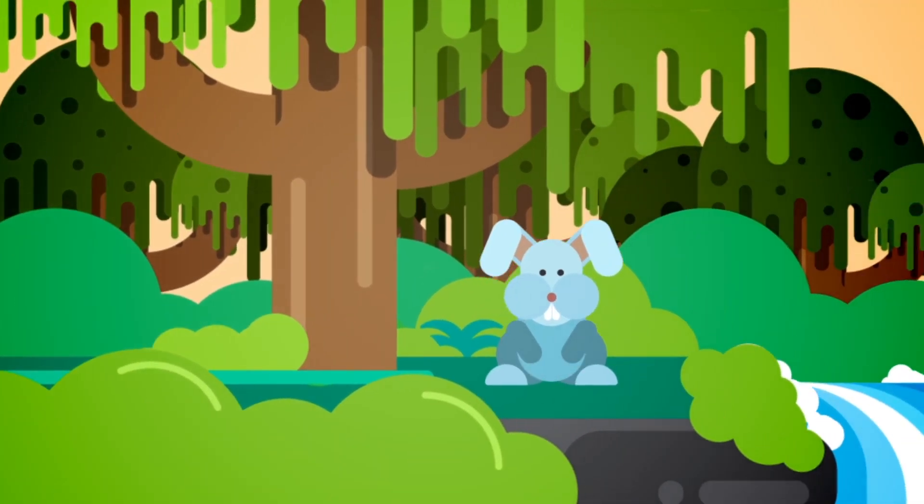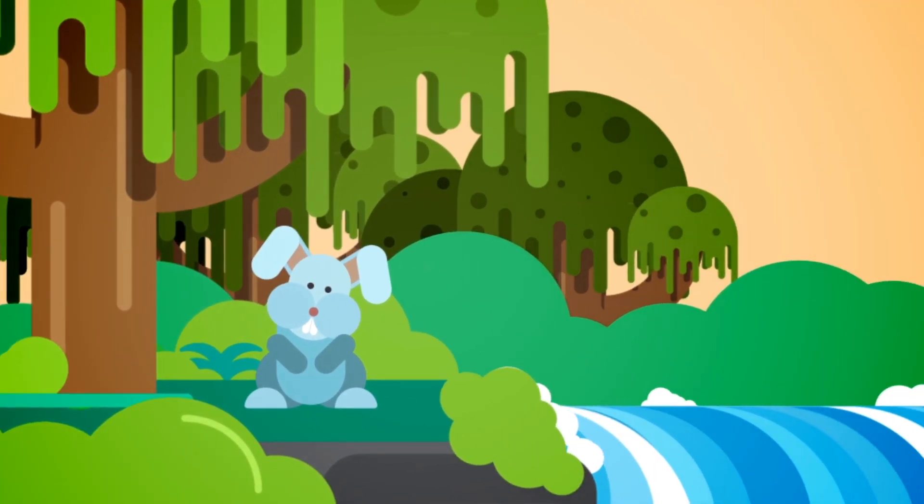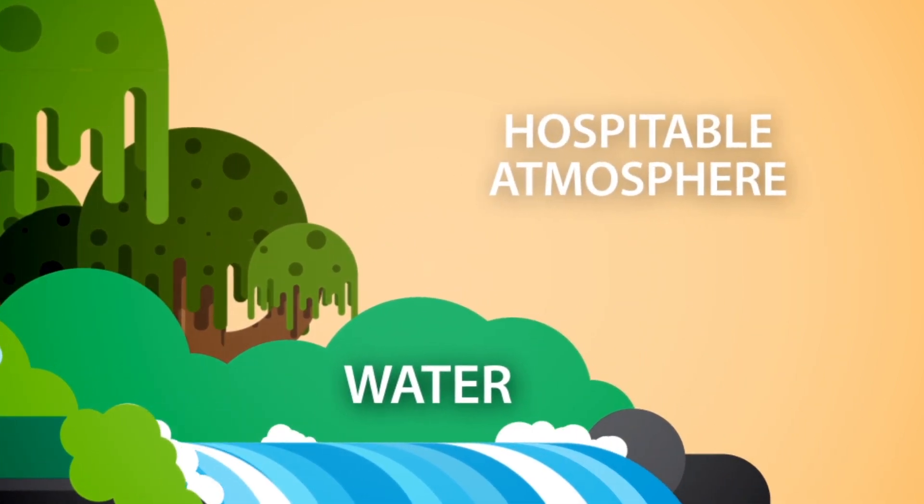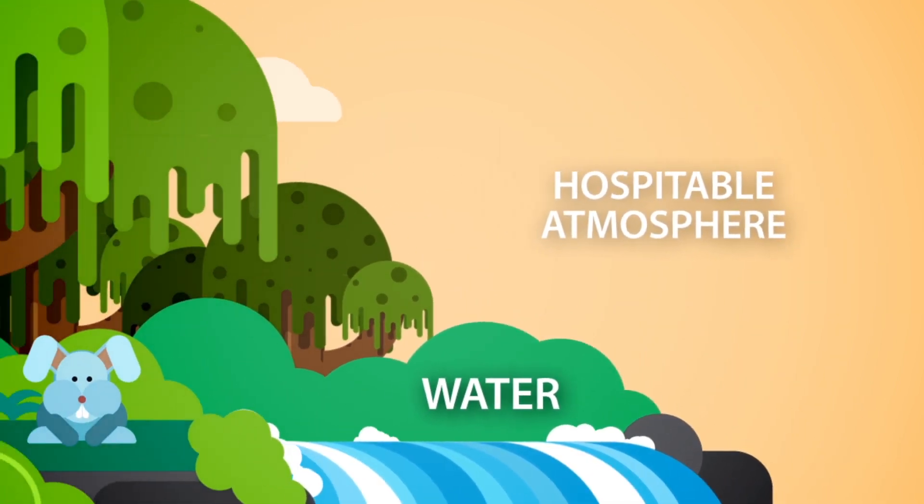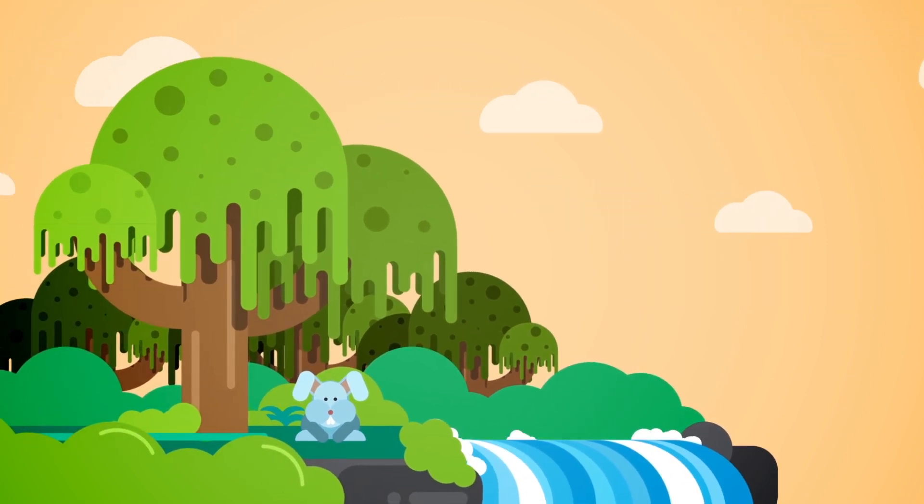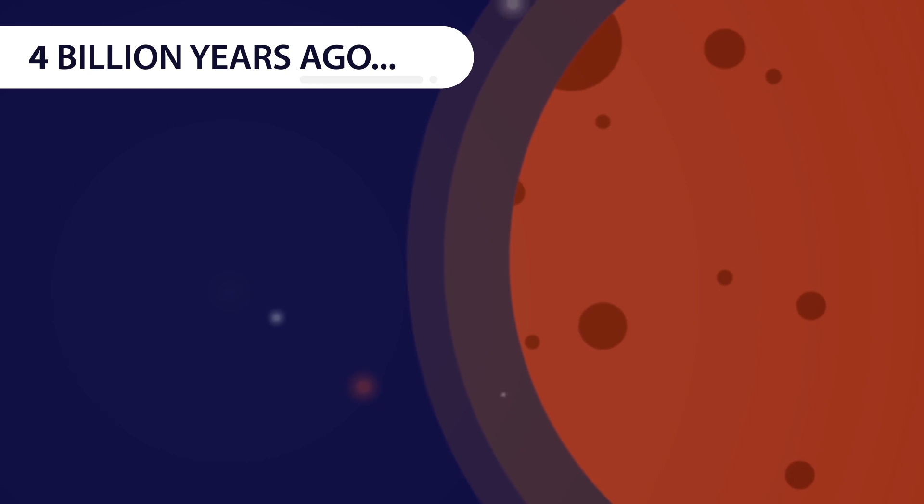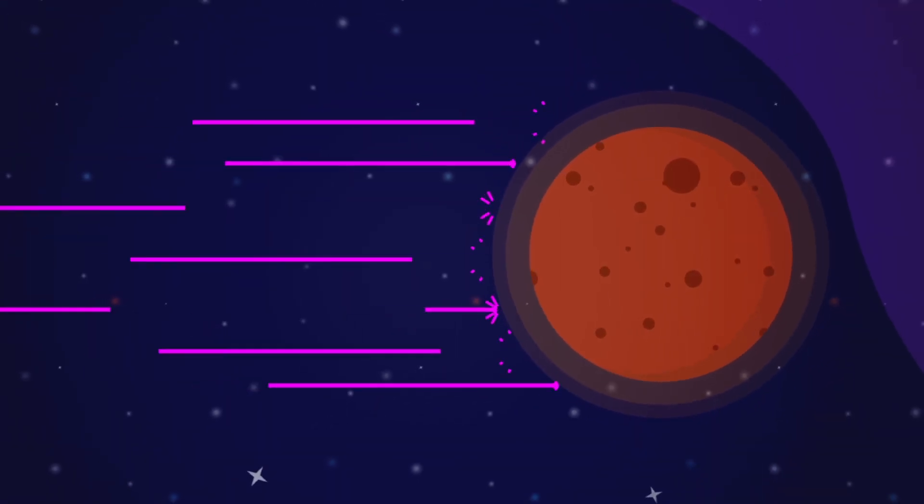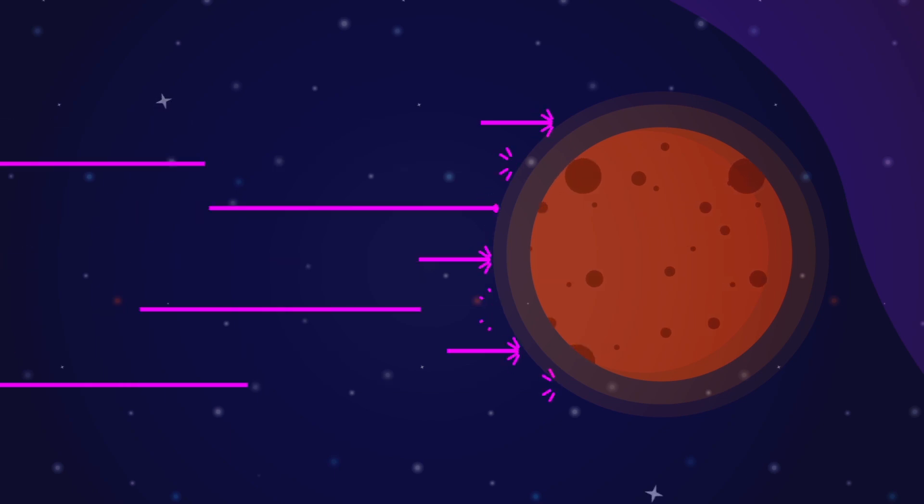When it comes to the existence of life, the basic requirements, or the key, is liquid water and a hospitable atmosphere that can control the temperature so the water won't evaporate or freeze. Four billion years ago, Mars had a thicker atmosphere which protected its surface from the sun's harmful rays and kept it warm.